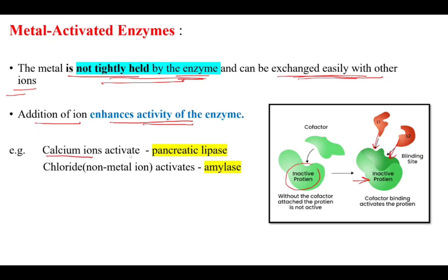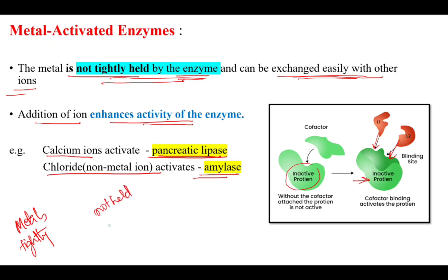For example, calcium ions activate the enzyme pancreatic lipase, and chloride ions activate the enzyme amylase. In summary, metalloenzymes hold the metals tightly, whereas in metal activated enzymes the metals are not held tightly. Both are examples of inorganic cofactors.